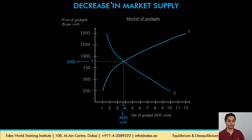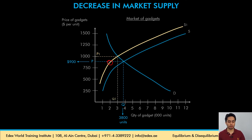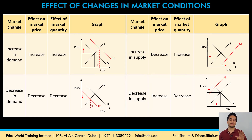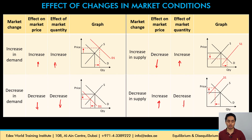If there is a decrease in market supply, the supply curve shifts to the left. At the current price level, the quantity demanded is still 3,800 units but the quantity supplied is lower, creating a shortage. The shortage will tend to move the price up from P to P1 and decrease the quantity from Q to Q1. To summarize: an increase in demand raises both price and quantity; a decrease in demand lowers both. An increase in supply lowers price but raises quantity; a decrease in supply raises price but lowers quantity.